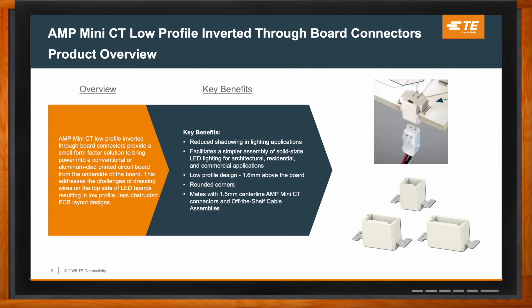This addresses the challenges of dressing wires on the top side of the board and ultimately results in a low profile, less obstructed PCB layout design. These connectors are positioned through a cutout or a notch in the PCB and they sit only 1.6 millimeters above the board. They also offer surface mount hold downs that provide stability during the connector mating and unmating phases.